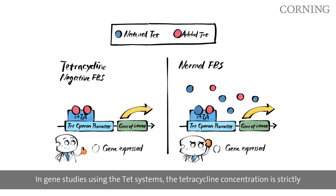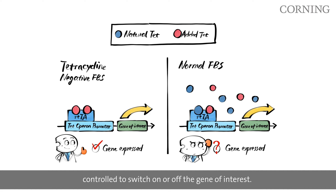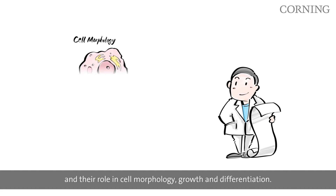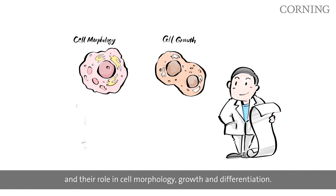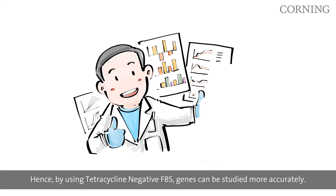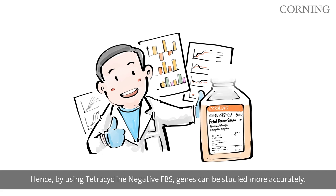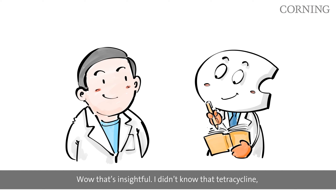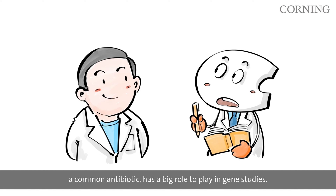In gene studies using the Tet systems, the tetracycline concentration is strictly controlled to switch on or off the gene of interest. This mechanism enables the discovery of gene regulation and their role in cell morphology, growth, and differentiation. Hence, by using tetracycline-negative FBS, genes can be studied more accurately.